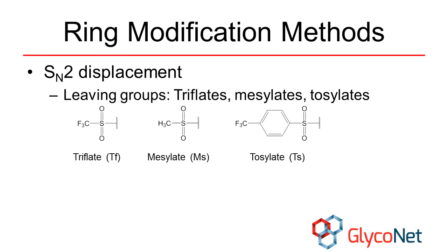We will now move on to discuss methods for carrying out substitutions on monosaccharides. As mentioned previously, most substitution reactions carried out on sugars are SN2 processes, which result in an inversion of the stereochemistry.